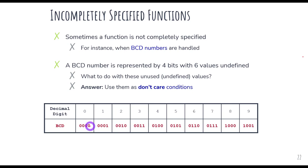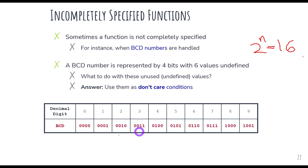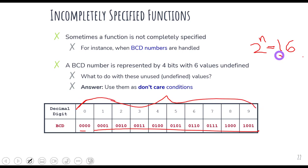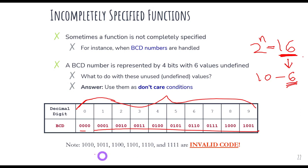With four digits, that means four inputs, and two to the power of four equals 16 — so there are 16 possible combinations in total. But we are only using 10 of them, from zero to nine. So what happens to the remaining six combinations? We call them invalid codes. We do not use these six four-digit combinations in BCD.